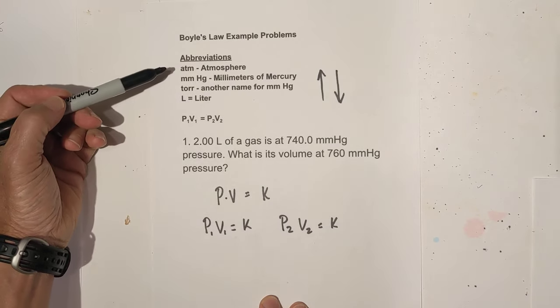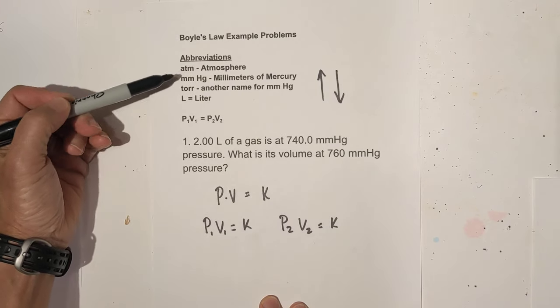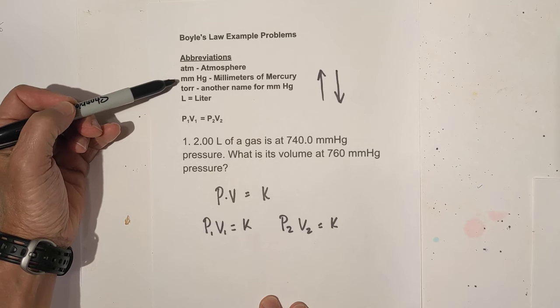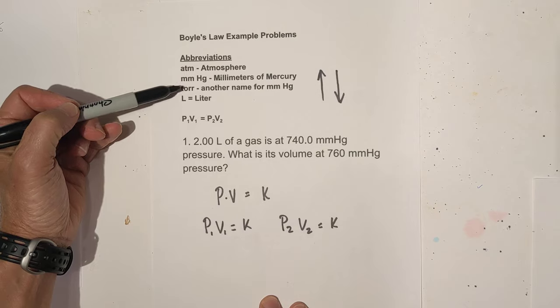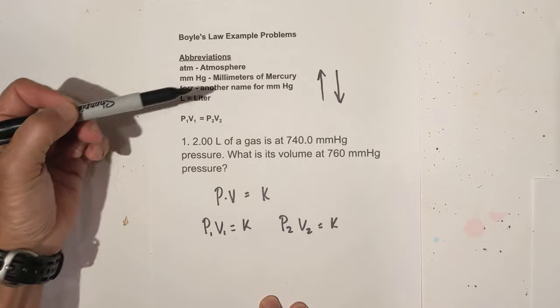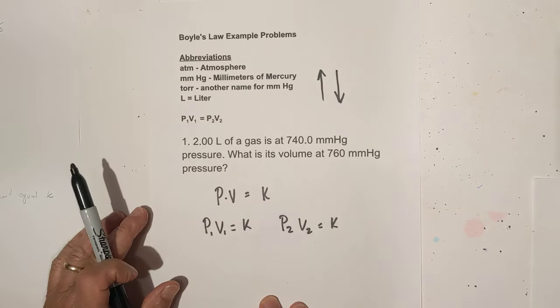Let's go over some abbreviations you may see. ATM is for atmosphere, millimeters of mercury is for pressure, torr is another name for millimeters of mercury, and liter is a volume measurement.